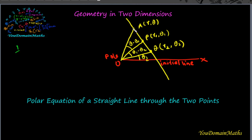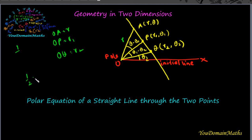The area of triangle AOQ equals the area of triangle AOP plus the area of triangle POQ, where OA = r, OP = r₁, and OQ = r₂. The area of triangle AOQ equals half of r·r₂·sin(θ − θ₂), since the angle between OA and OQ is θ − θ₂.